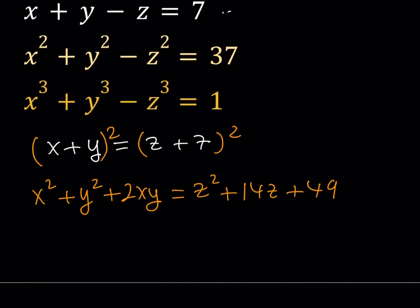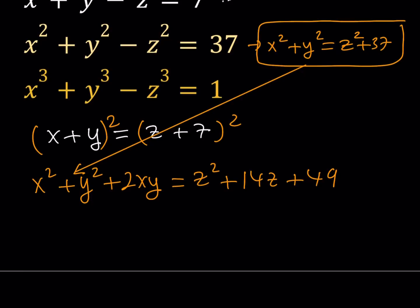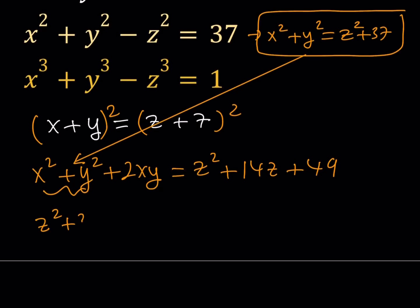Now, from the second equation, I do know that x squared plus y squared can be isolated and written as z squared plus 37. And then, I would like to use this here on the left-hand side. So now let's go ahead and replace x squared plus y squared with that. And that's going to give us z squared plus 37 plus 2xy equals z squared plus 14z plus 49.